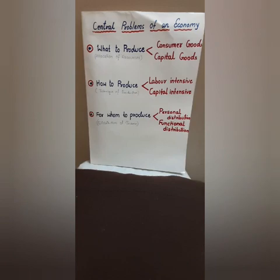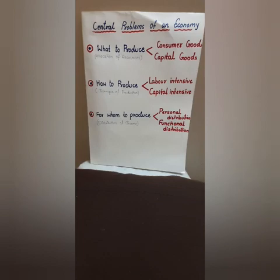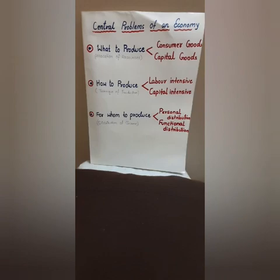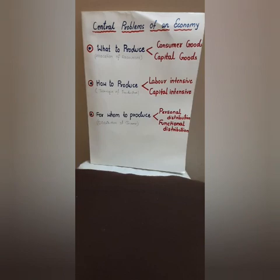The second problem is concerned with how to produce. The technique of production is the main concern. As a producer, we can produce either by using the labor intensive method or the capital intensive method. We can produce goods through a manual process using labor, or using highly automated machines through capital intensive methods. It is again a problem for the producer to choose the technique of production, related to employment situation and GDP growth. So while choosing a production technique, we have to consider labor intensive versus capital intensive.